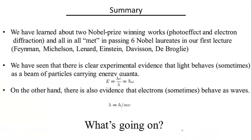So to summarize, let me just tell you what we've learned so far in the last two segments. So far in the first lecture, we have talked about two Nobel Prize winning works, the photoelectric effect and the electron diffraction. And all in all, we met in passing at least six Nobel laureates in our first lecture: Feynman, Michelson, Lenard, Einstein, Davison, de Broglie, so not too bad.